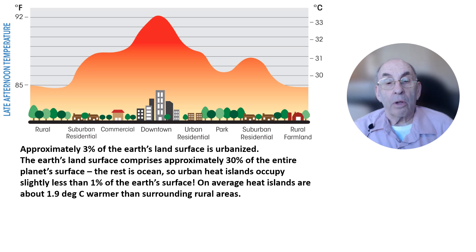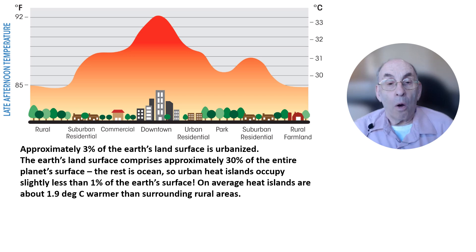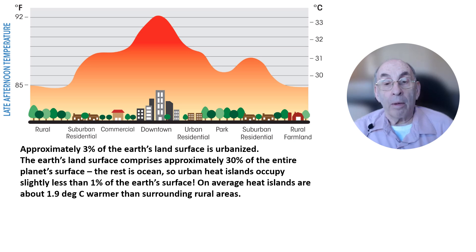The basic reason that the urban heat island contribution to the overall warming of the planet is small is that the surface area of the earth that is urbanized is quite small. At present, only about 3% of the earth's land area is urbanized, and since only about 30% of the earth's surface is land, that means urban areas cover slightly less than 1% of the entire earth's surface.